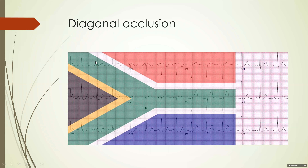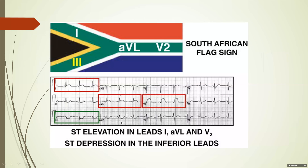With diagonal occlusion, you have a high lateral wall MI with ST elevation in leads I and aVL plus V2, with reciprocal ST depressions in lead III — and often in aVF and II as well. Here is a more clear-cut example of the South African Flag Sign: ST elevation in I, aVL, and V2 with reciprocal depression in III, aVF, and II.